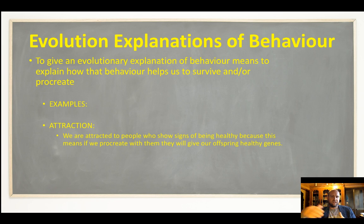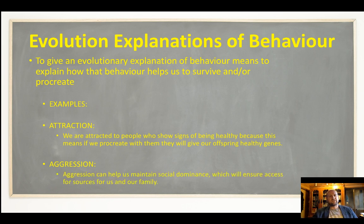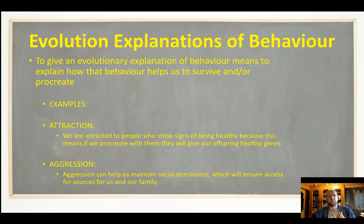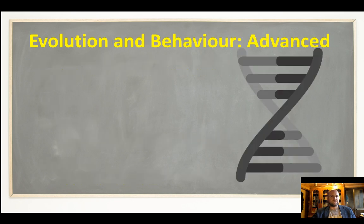An example of aggression and evolution is more directly about survival in the short term, which will later allow us to pass on our genes. Aggression can help us maintain social dominance — it can keep us at the top of the social hierarchy. Being at the top means you've got more access to resources, the things you need to survive and for your children to survive and be healthy. So it's not only about surviving in the short term, but also protecting our offspring to make sure our genetic material continues.